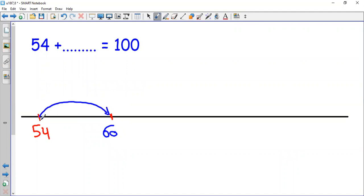How many more steps? I look at the units. 4 plus what makes 10? 4 plus 6. So 54 plus 6 makes 60.